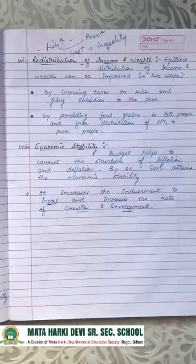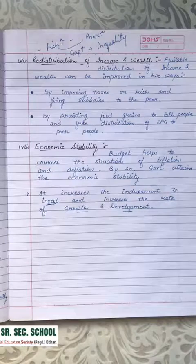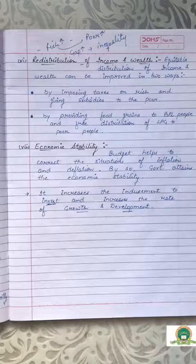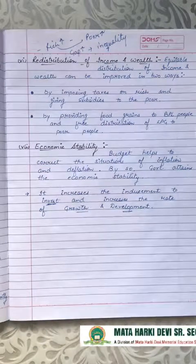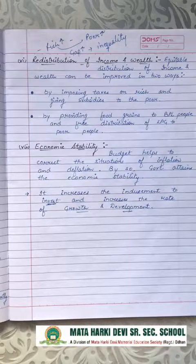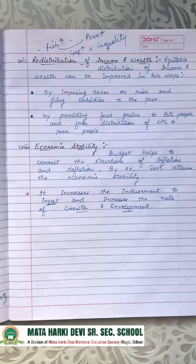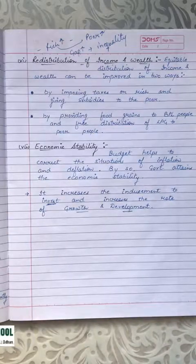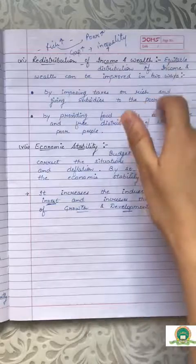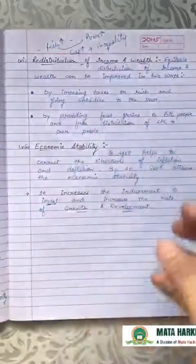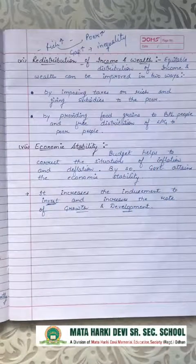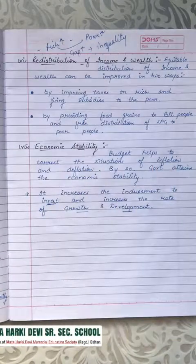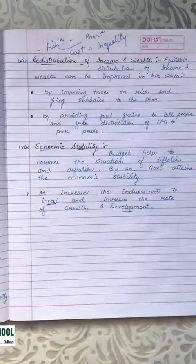So these are the points related to the objectives of government budget. Basically the government manages revenue and expenditures in a way that increases the country's GDP, eliminates inflation and deflation problems, and corrects all the inequality prevailing in the country. This is all for today's lecture. Thank you students.